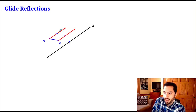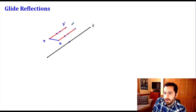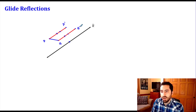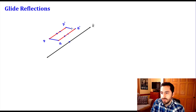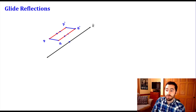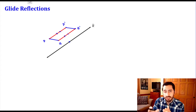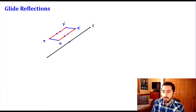We want the translation to be parallel to reflection line K, so we're moving in the same direction as that line. P and Q are also going to travel the same distance, which is just what a translation is. That takes us to P prime and Q prime — here's our new segment, which is our middle step.